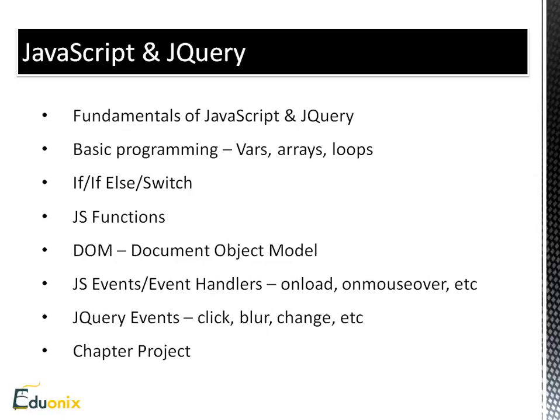In chapter two, we talked about JavaScript and jQuery. We learned the fundamentals — basic programming in JavaScript: variables, arrays, loops, if statements, if-else, and switch statements, and JavaScript functions. We looked at the DOM, or the Document Object Model, to see how a web page is actually built up. We covered JavaScript events and event handlers, how we can run a function with a click or a mouse over. We also looked at jQuery events like click, blur, and change, and then created a project implementing JavaScript for form validation and jQuery for simple animation.